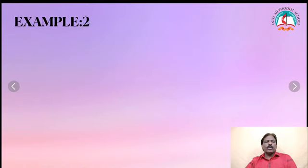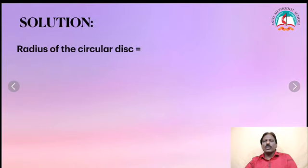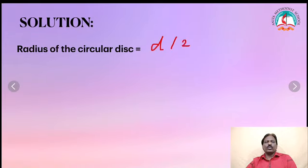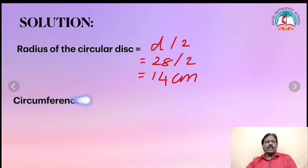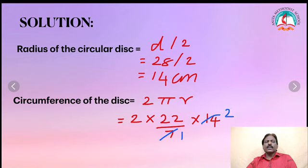See Example 2. What is the circumference of the circular disc of diameter 28cm? Solution: radius of the circular disc - actually diameter is given, so radius is equal to d by 2, which is 28 by 2, equal to 14cm. Therefore, circumference of the disc is equal to 2πr, which is 2 into 22 by 7 into 14. Cancel 7 and 14, giving 4 into 22, equals 88cm.